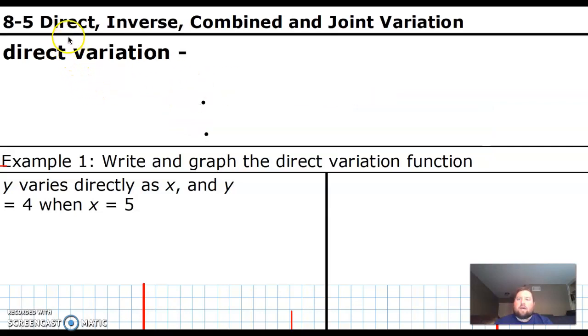Alright guys, next lesson is about direct, inverse, combined, and joint variation. It's 8-5. Direct variation you've actually done before. You learned this in Algebra 1, maybe even a little before that.